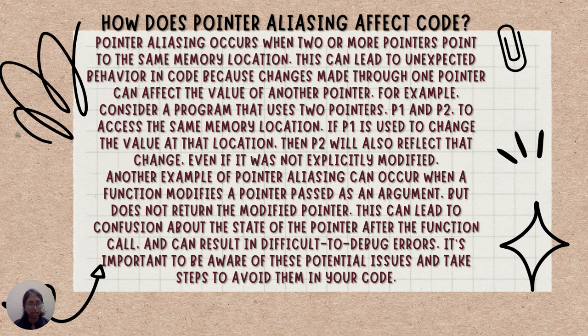Another example of Pointer Aliasing can occur when a function modifies a pointer passed as an argument but does not return the modified pointer. This can lead to confusion about the state of the pointer after the function call and can result in difficult-to-debug errors. It's important to be aware of these potential issues and take steps to avoid them in your code.